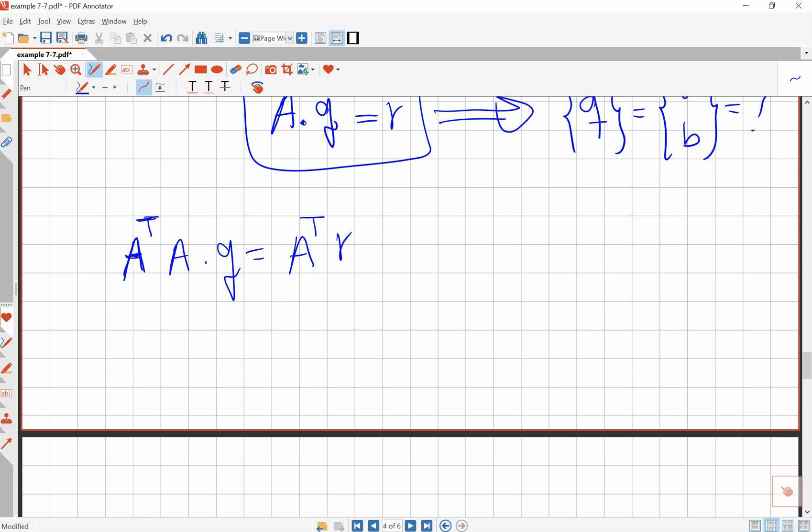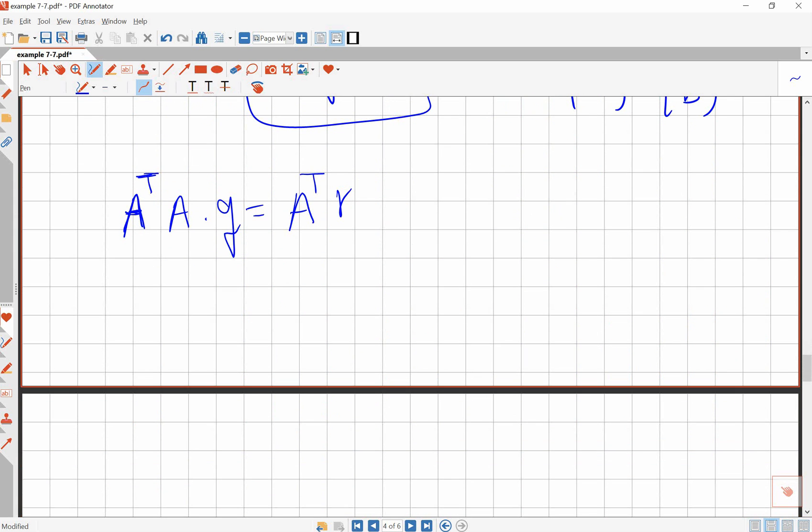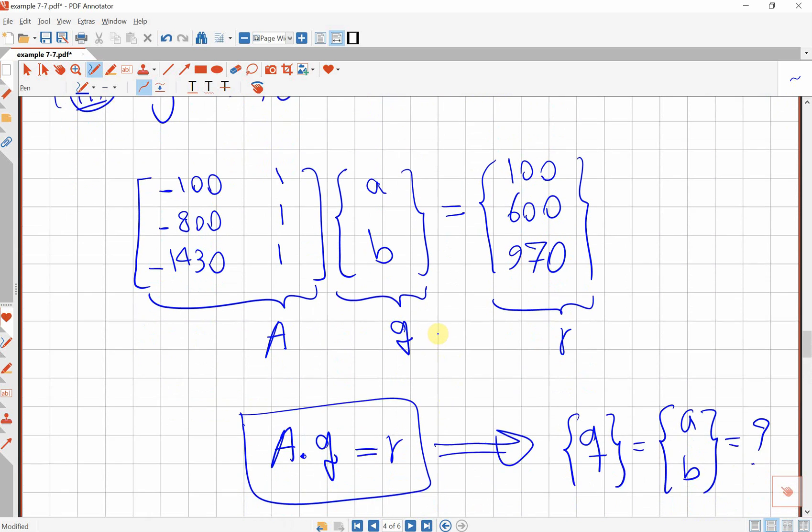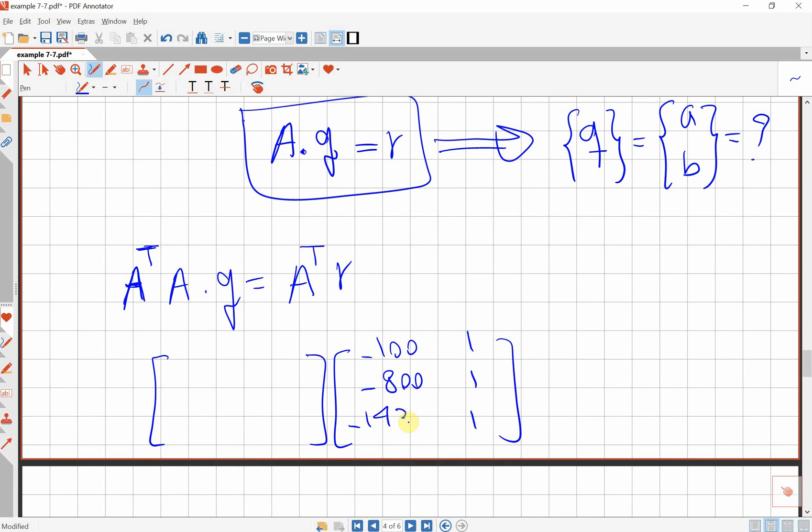So I'm gonna use the numerical value here. This is my A matrix. I'm gonna write A first: minus 100, minus 800, 1, 1, 1, minus 1430. The transpose of this one will be 1, 1, 1, minus 100, minus 800, minus 1430. So this times q equals to A transpose, same matrix: 1, minus 100, 1, minus 800, and 1, minus 1430.